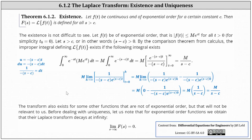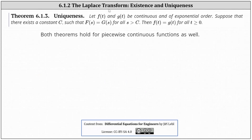Now let's look at the uniqueness theorem. Let f of t and g of t be continuous and of exponential order. Suppose there exists a constant c such that big F of s equals big G of s for all s greater than c. Then it follows that f of t equals g of t for all t greater than or equal to zero. Finally, both the existence and uniqueness theorems hold for piecewise continuous functions as well, like the unit step function. I hope you found this helpful.